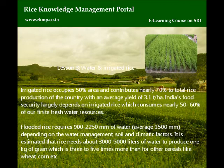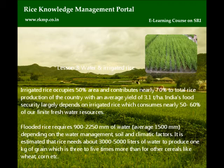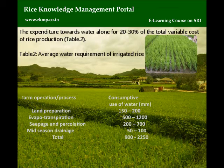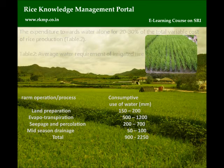It is estimated that rice needs about 3,000 to 5,000 liters of water to produce 1 kg of grain, which is 3 to 5 times more than for other cereals like wheat and corn. The expenditure towards water alone accounts for 20-30% of the total variable cost of rice production. Table 2: Average water requirement of irrigated rice.